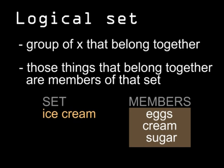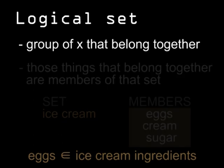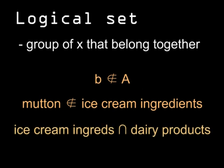If something is an element of set A, it's represented this way. So eggs are an element of the set of ice cream ingredients. We can also say that some B is not an element of set A — for example, mutton is not an element of the set of ice cream ingredients. Some members of ice cream ingredients are also members of the set of dairy products, so the two sets intersect each other. That's the intersection of the two sets.